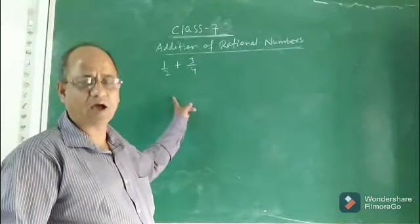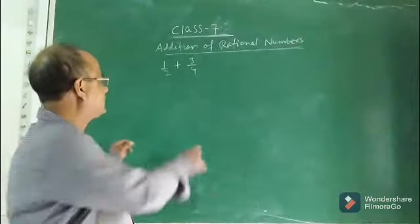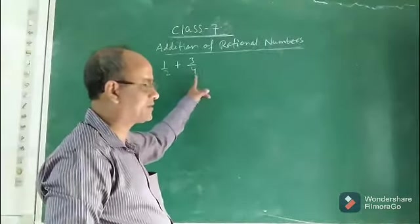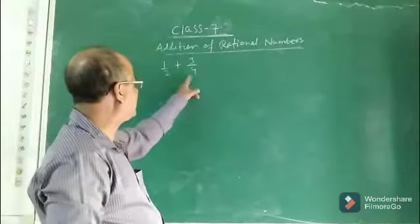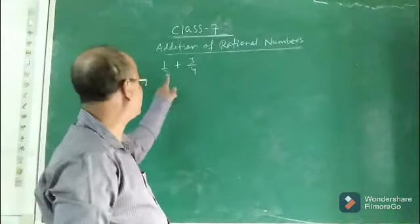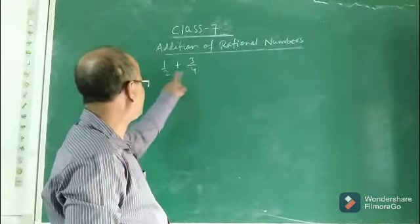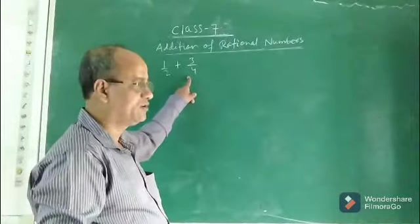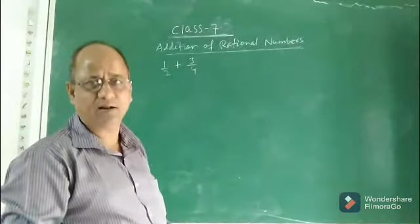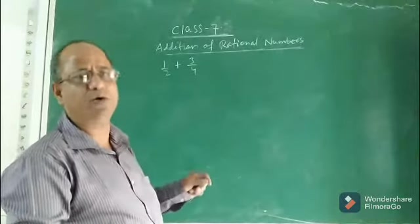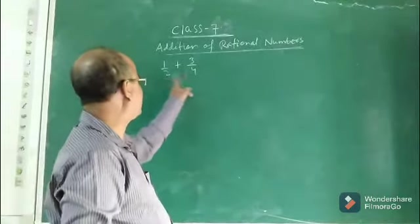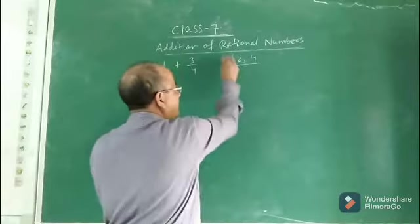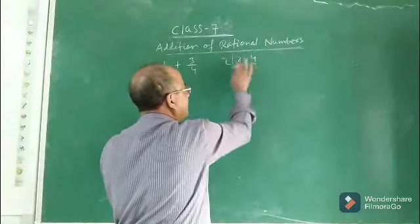What is the process? Let me recall once again. Since the denominator is different here, to add these two unlike rational numbers, what we have to do? We have to make their denominators the same. The denominator here is 2 and here is 4, so we have to express both rational numbers with the same denominator. We will take the LCM of the denominators. Take the LCM of 2 and 4 and find it out.